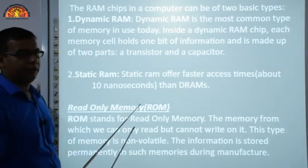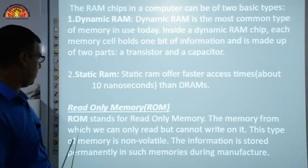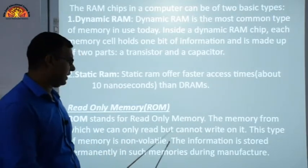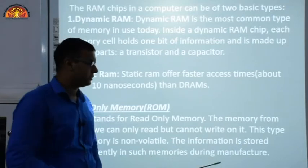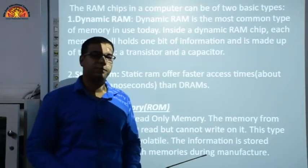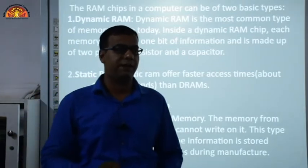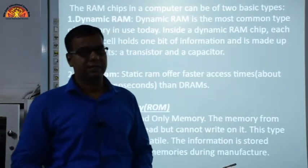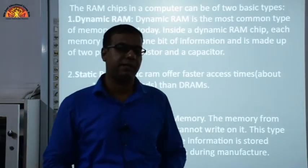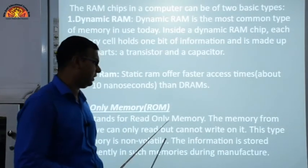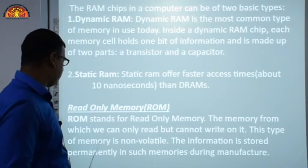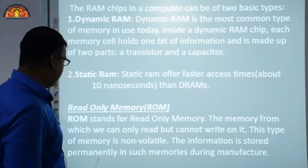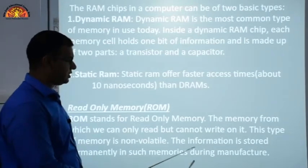Read Only Memory, called ROM, stands for read-only memory. It is the memory from which we can only read but cannot write. ROM has predefined instructions stored in it — for example, information about your system's hard disk space and RAM amount is stored in ROM. This type of memory is non-volatile, meaning data is stored permanently during manufacturing.